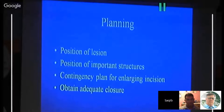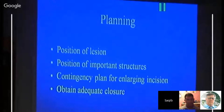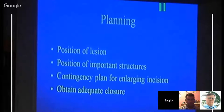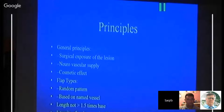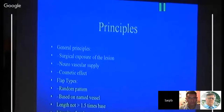Planning includes positioning of the lesion, important structures, a contingency plan for enlarging the incision, and obtaining adequate closure. While making an incision, also plan how you will close it — you may need to harvest pericranium or prepare another flap. General principles include adequate surgical exposure of the lesion, preserving neurovascular supply, cosmetic considerations, and selecting the simplest approach. Flaps can be random or based on main vessels. The flap length should not exceed 1.5 times its width; incisions should remain behind the hairline with no crossing cuts that create sharp edges.